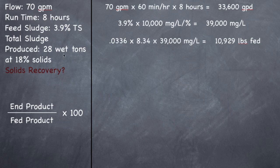What we produced was 28 wet tons — it's not dry yet. You can almost never get a belt press 100% dry without some sort of oven attached to it. So we've figured out how much we fed; now we need to find the end product. We produced 28 wet tons and it's 18% solids, meaning it's 82% wet.